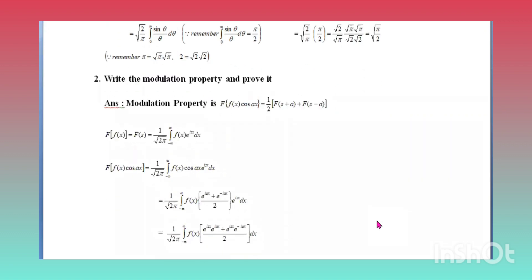Next, I will explain the modulation property and prove it. The modulation property states: F{f(x)cos(ax)} = (1/2)[F(s+a) + F(s−a)]. This is the modulation property.